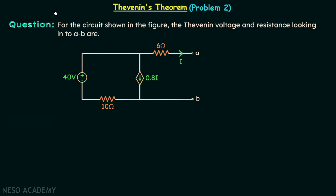In this presentation we are going to solve one problem on Thevenin's theorem in which there is one dependent source present in the network. This problem is quite important because we are going to use a technique which we have not used till now. Therefore I want you to watch this particular lecture till the very end. Now we will read the given problem.